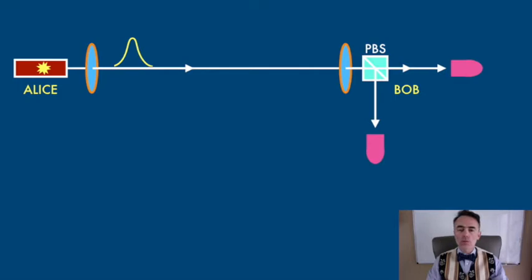Imagine one of those pulses contains two photons and Eve does her attack by being in the middle, detecting Alice's photons and then sending those photons to Bob.